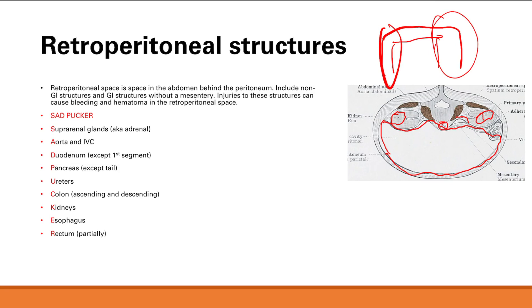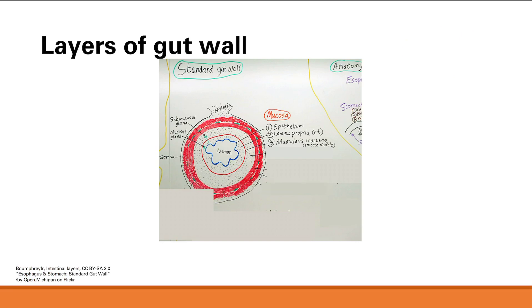We talked about kidneys. The esophagus is also not in the peritoneum — it's retroperitoneal. And finally your rectum — part of it is not in the peritoneum. So that's it for the retroperitoneal structures.